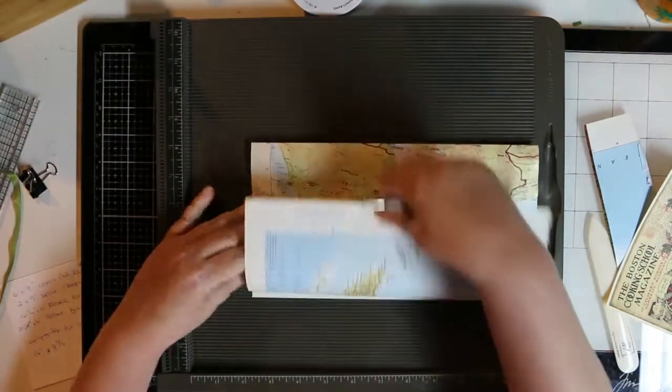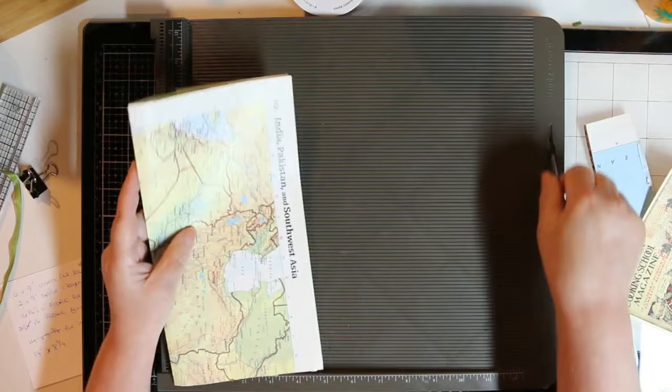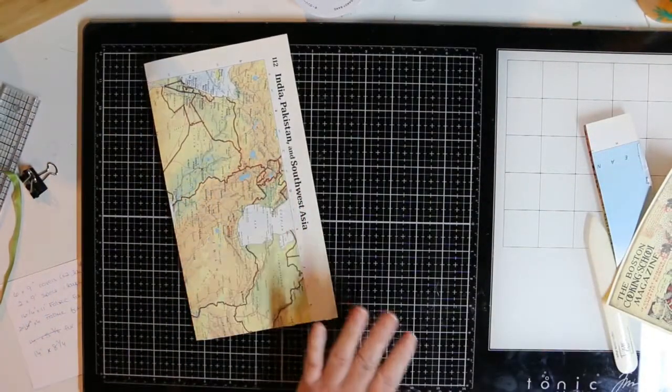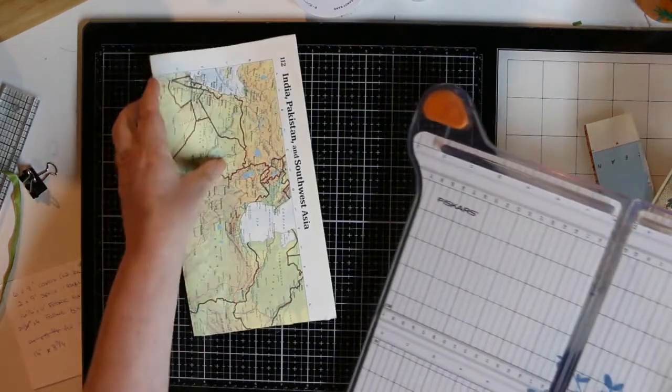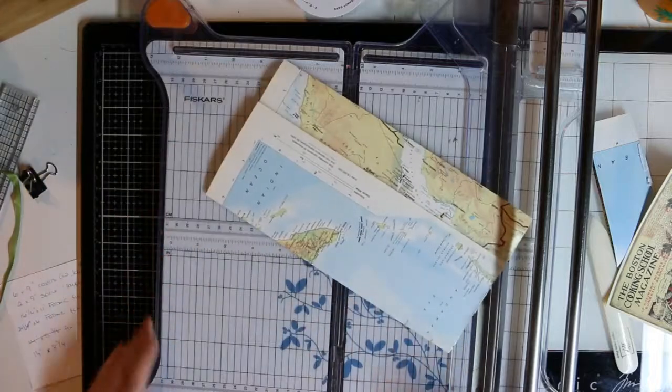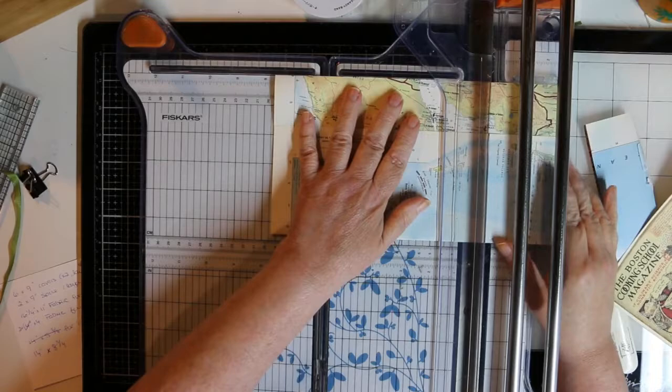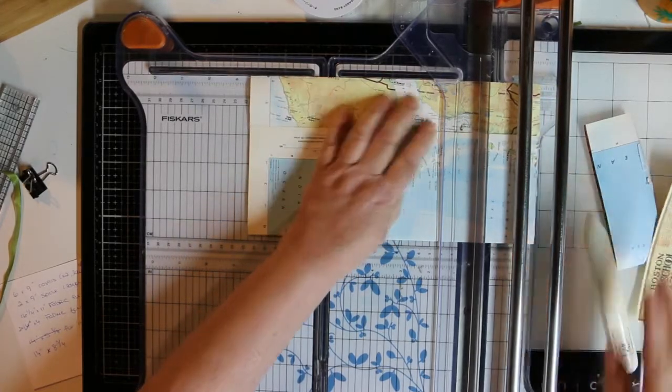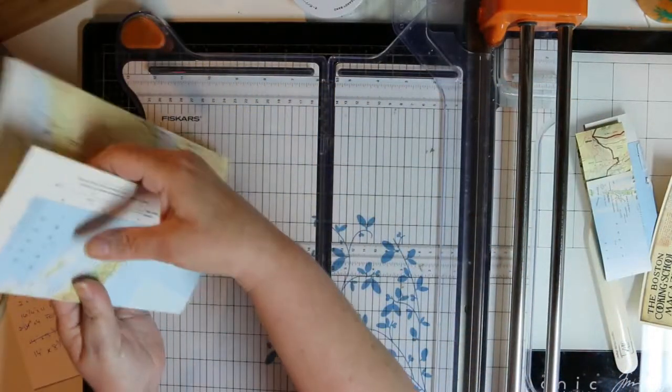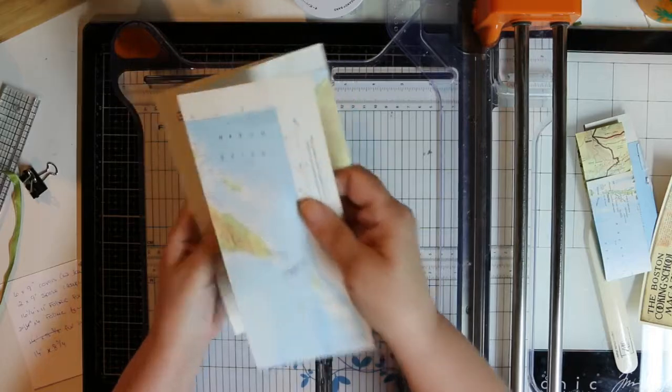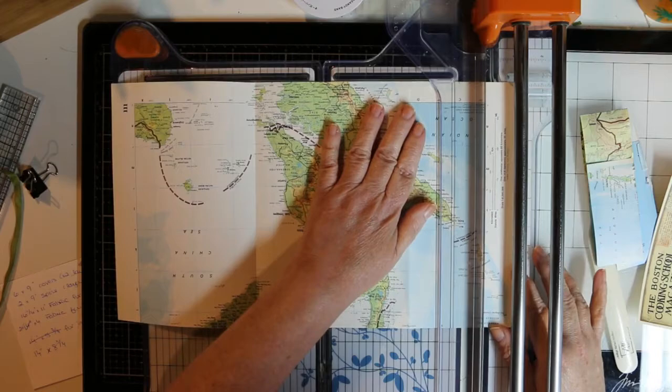And then this one I'm going to fold backwards. Bringing in my paper trimmer, and I'm going to cut it at eight and a half. And again, this flap is way too big, so I'm going to just take off an inch to make it not so big.